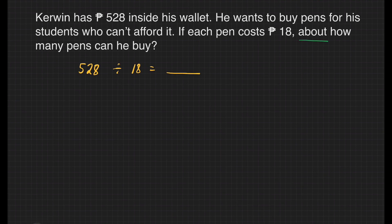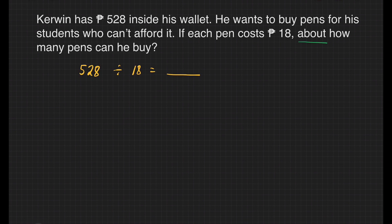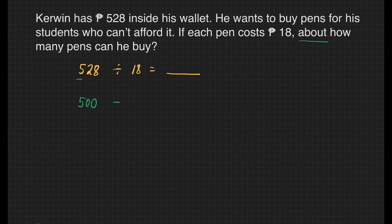To estimate the quotient, we have to, number one, round off the dividend and the divisor to their highest place value. What is the highest place value of 528? It's the hundreds place. So we'll round off 528 to the hundreds place — that will give us 500. Next, we'll copy the division sign. What is the highest place value of 18? It's going to be the tens place, and we'll round off 18 to 20.